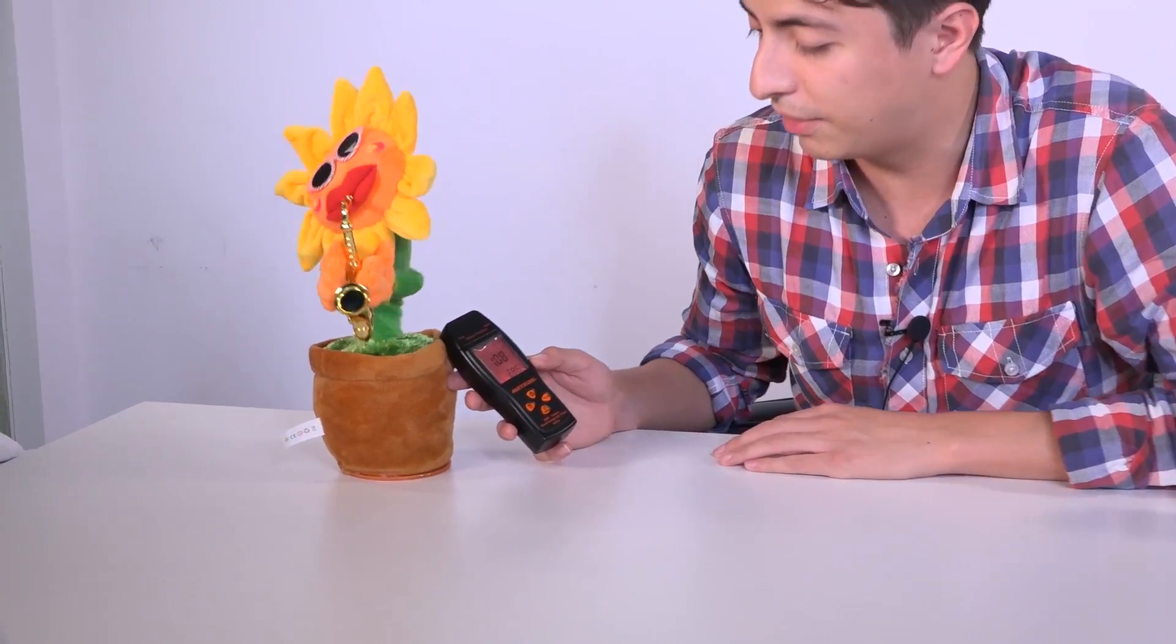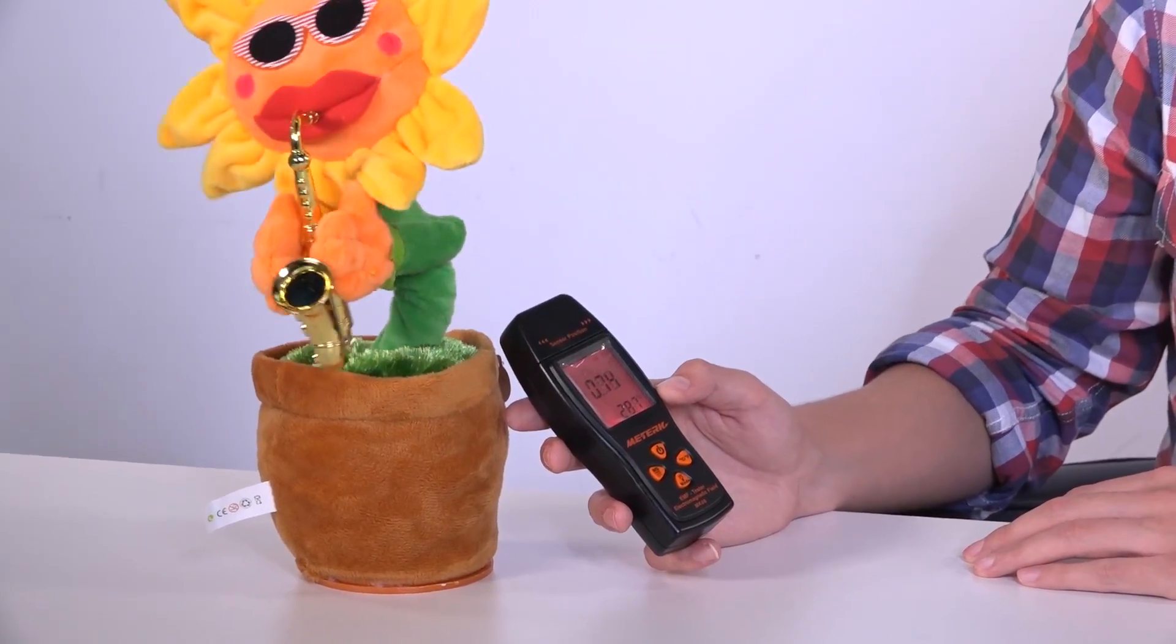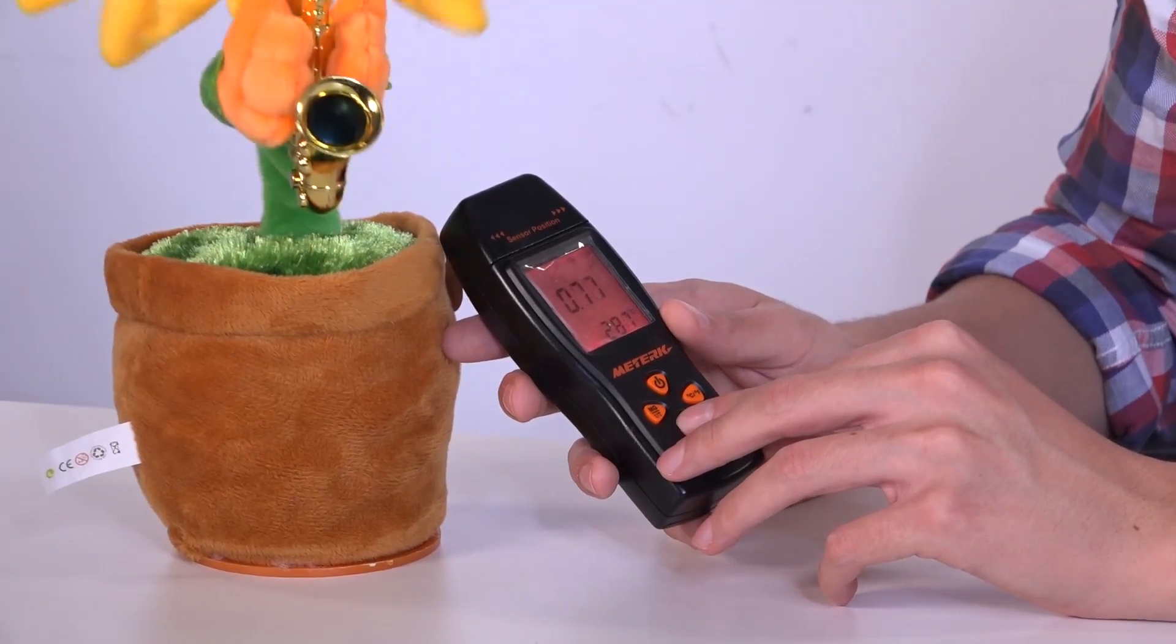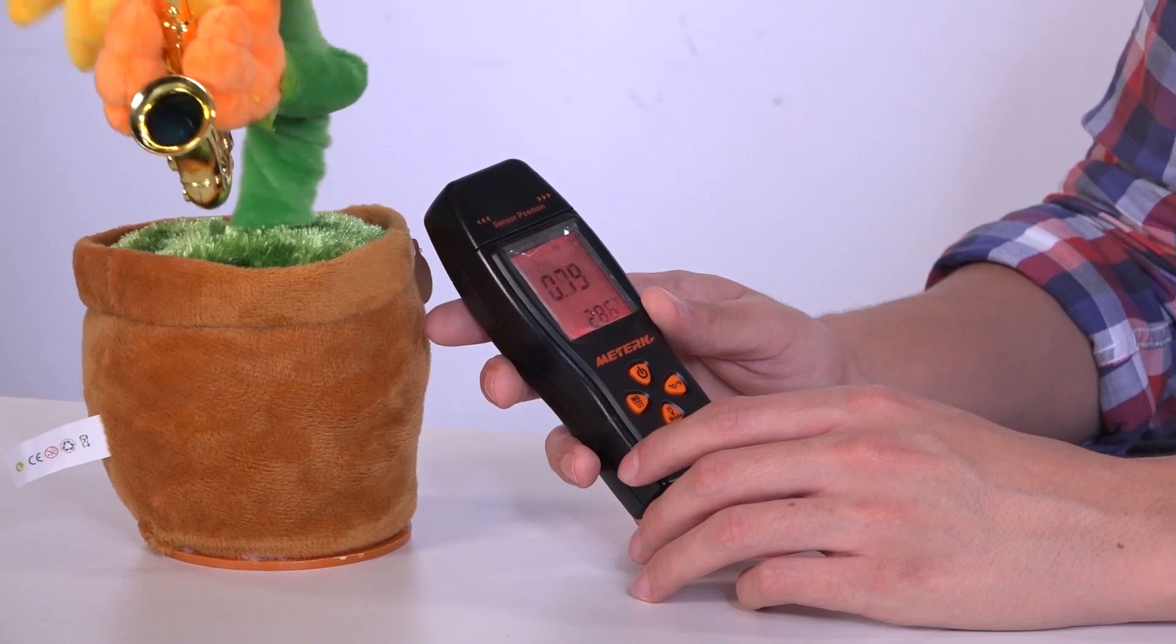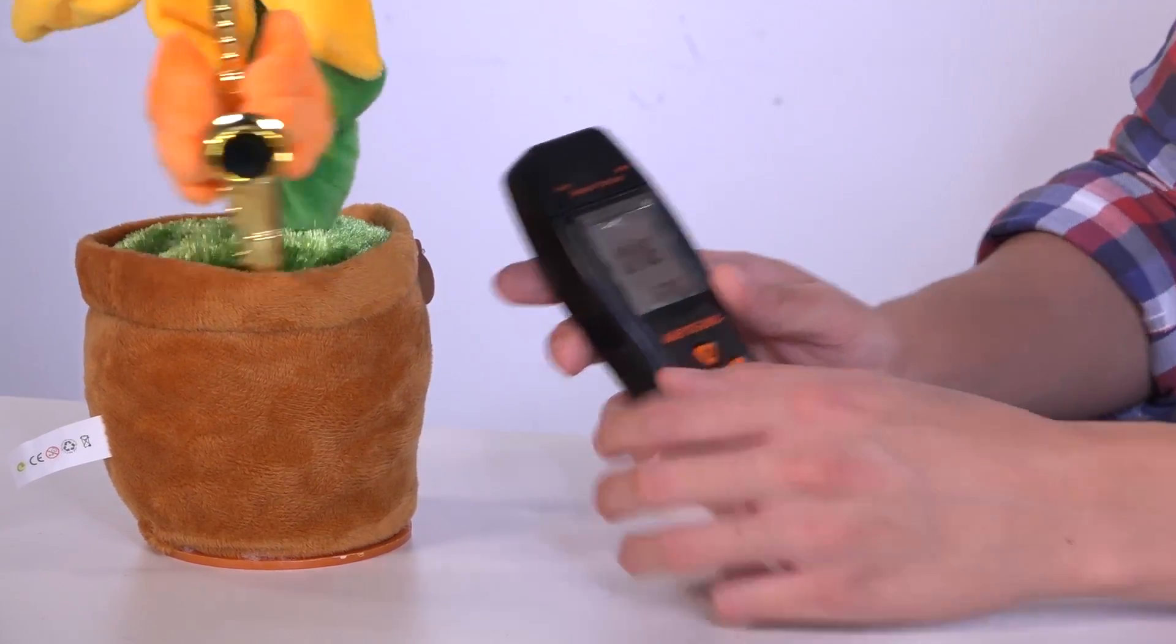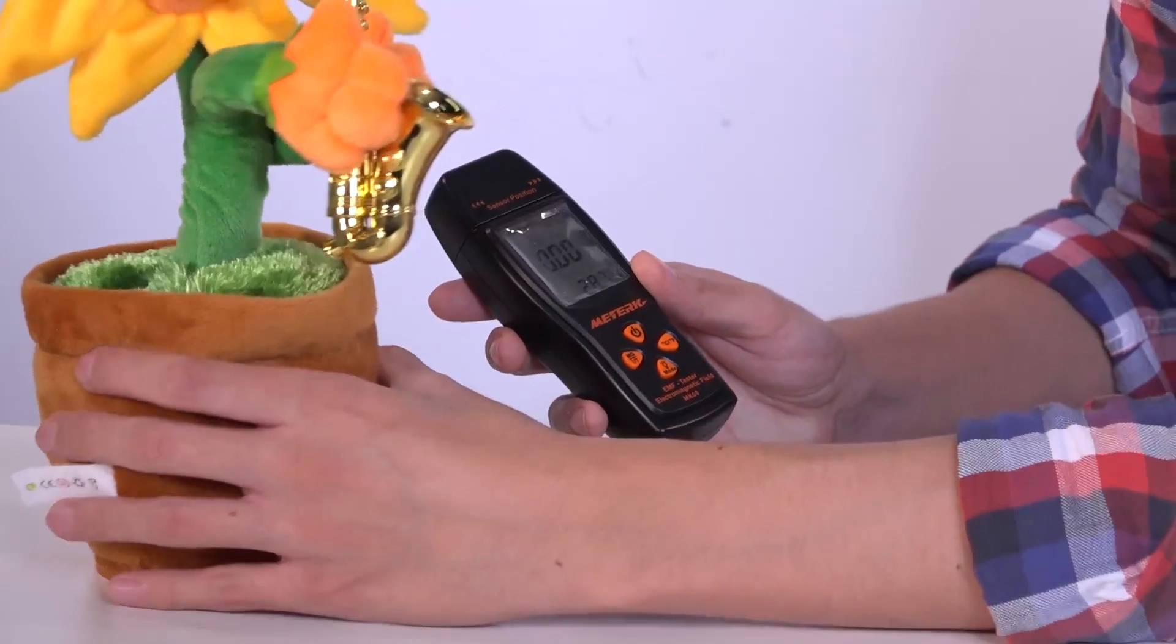Now we can try and measure something else like this little dancing flower. And it goes over our limit that we set up 0.5 microteslas. So that's how we can know what's the magnitude of the field our electronic stuff is making.